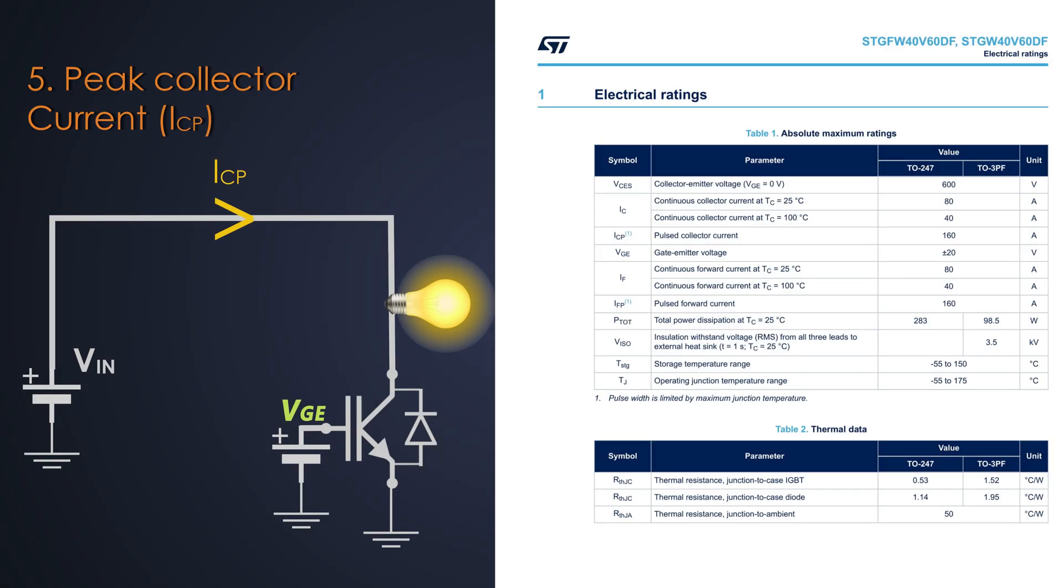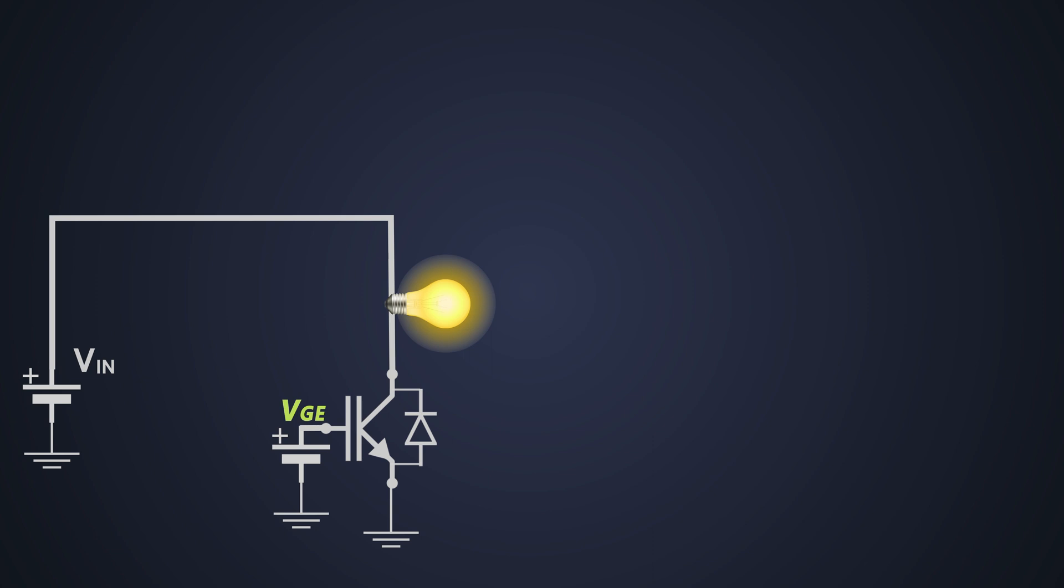Next is the peak collector current, which the IGBT can handle for very less time, typically 10 microseconds. For the IGBT which we are referring to, it is 160 amperes. This is the upper limit of the safe operating area of the IGBT.